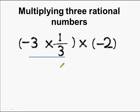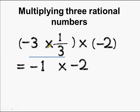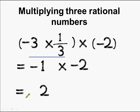Now let's multiply 3 rational numbers. Here we have minus 3 multiplied by 1/3 multiplied by minus 2. First we take the group of minus 3 and 1/3 and multiply: minus 3 times 1/3 equals minus 3/3 which equals minus 1. Now we multiply by minus 2: minus 1 times minus 2 equals 2, since minus times minus becomes plus.